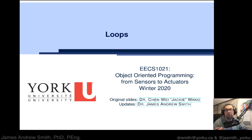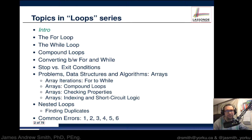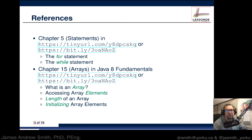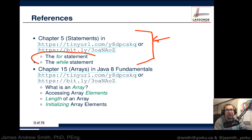Hi everyone, today we're going to be talking about loops within the EECS 1021 programming class — object-oriented programming from sensors to actuators, how we use Java to get stuff done. As always, I like to point out some good follow-up materials: there's the Java 8 Fundamentals book available as a free ebook at the university library, and inside chapter 5 there's a good discussion about the for and while looping statements.